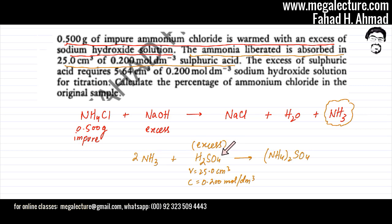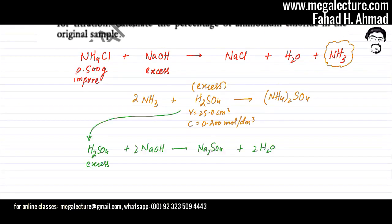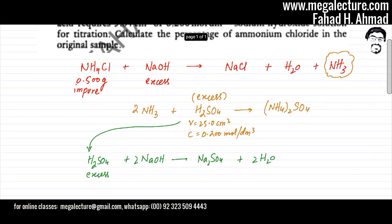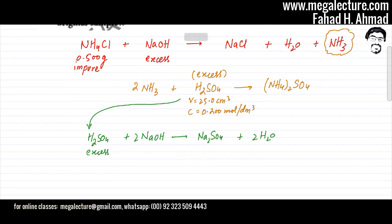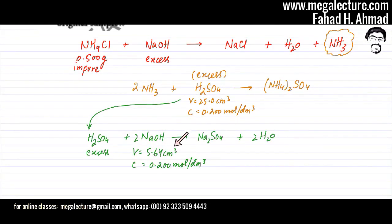The excess sulfuric acid requires 5.64 cm³ of 0.2 mol per dm³ NaOH solution to neutralize it. So there's another reaction: the leftover sulfuric acid reacts with NaOH to produce salt and water. The amount of NaOH used is given as 5.64 cm³ of 0.200 mol per dm³ concentration — accurate to three significant figures.